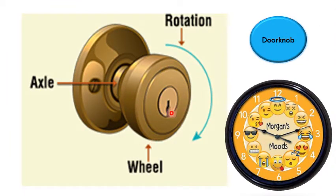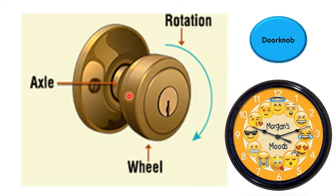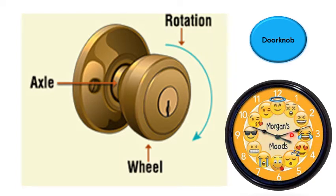One example of wheel and axle is a door knob. It is attached to a door — the outer round part is the wheel and the inner smaller rod is the axle. We rotate it, and its rotation is impossible without the axle. Apart from vehicles, wheel and axles are also used in wall clocks and wristwatches, where the axle is in the center and a wheel rotates around it.